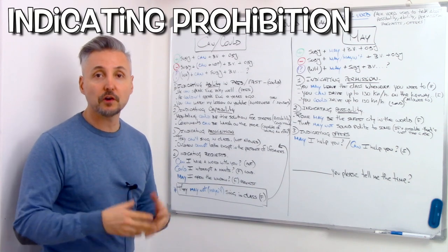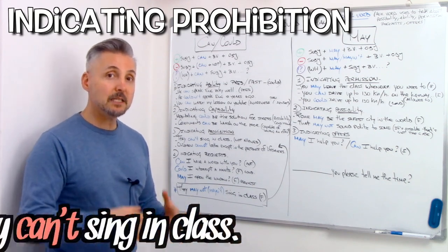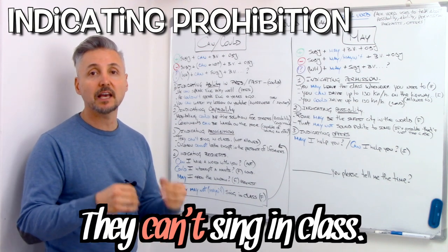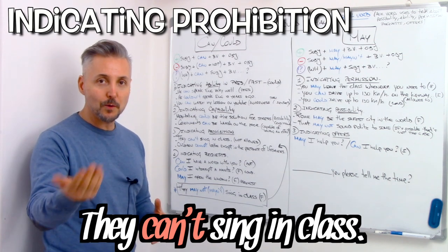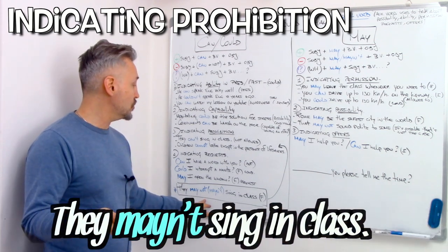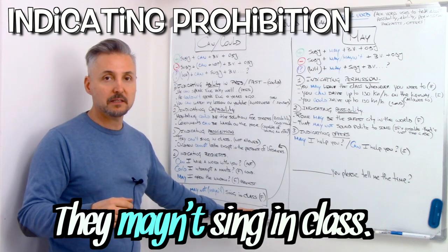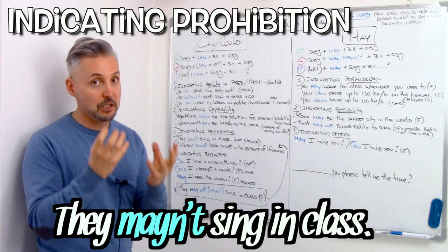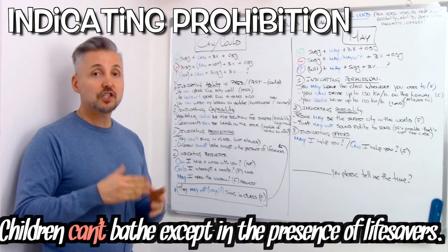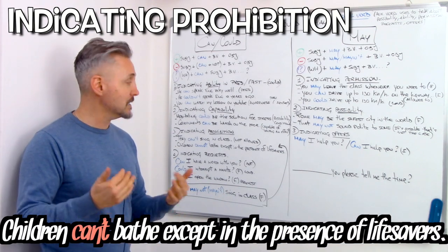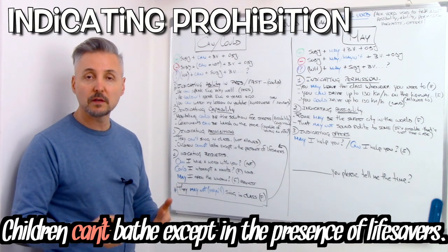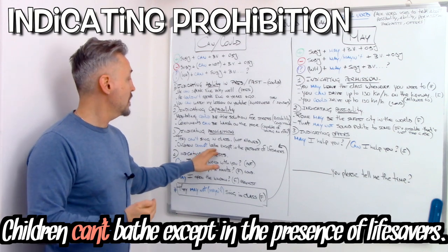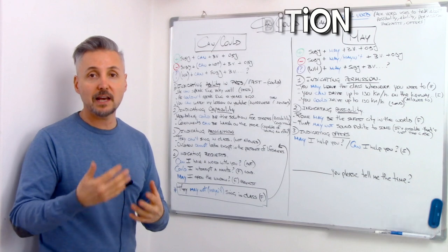The third usage is indicating prohibition. For example, they can't sing in class — they are not allowed. You may also use may: they may not sing in class, which is a very formal situation. Another example: children cannot bathe except in the presence of lifesavers.